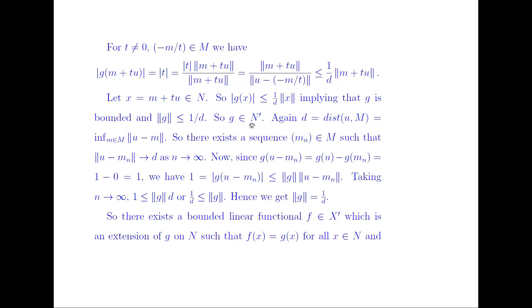So G belongs to the dual N'. Since D = inf ‖U − m‖, there exists a sequence {mₙ} ⊂ M such that ‖U − mₙ‖ → D. Now G(U − mₙ) = G(U) − G(mₙ) = 1 − 0 = 1. So 1 = |G(U − mₙ)| ≤ norm(G) · ‖U − mₙ‖. Taking n → ∞, we get 1 ≤ norm(G) · D, so 1/D ≤ norm(G). Combined with norm(G) ≤ 1/D, we get norm(G) = 1/D.